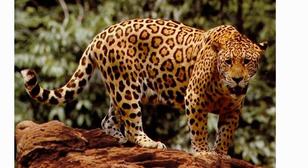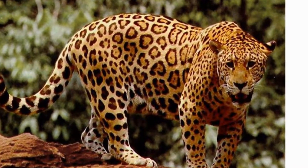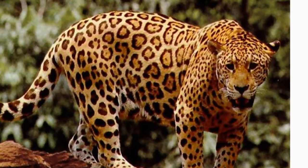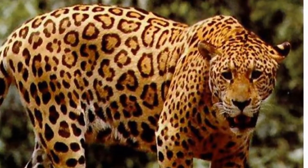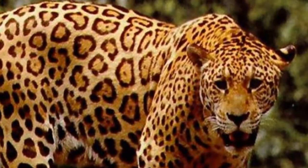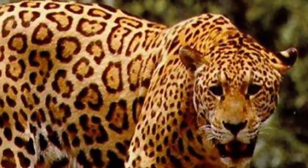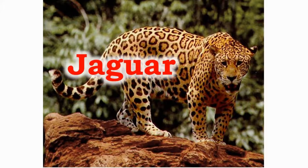This is a jaguar. It can be differentiated by its spots which look like roses from a distance — the spots of a jaguar are called rosettes. It is mostly found in America.